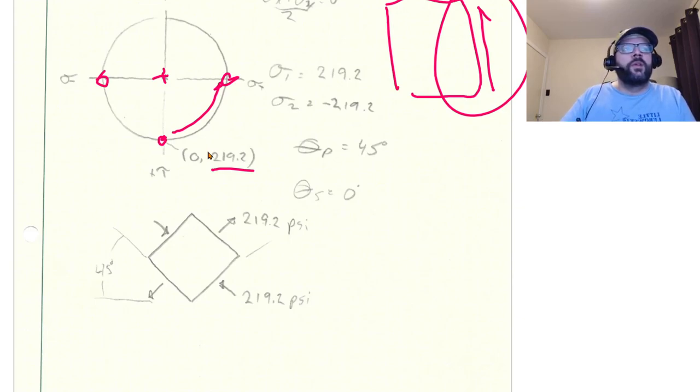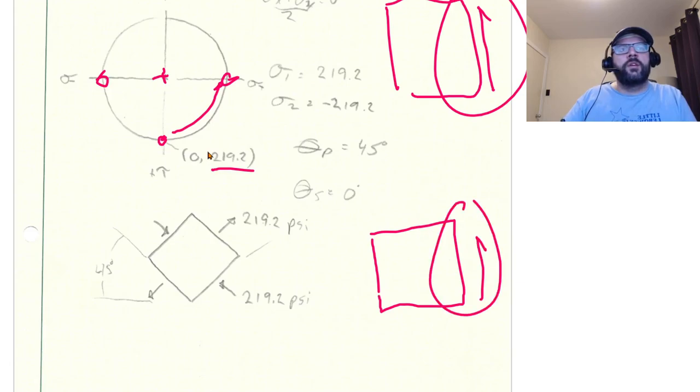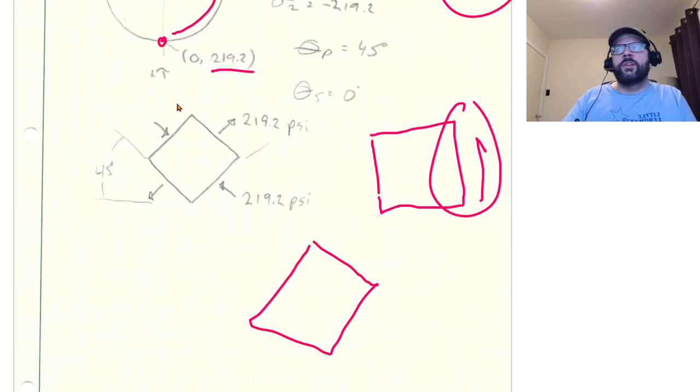So to go from there to there, if we start out with the shear stress on this face and we rotate it counterclockwise 45 degrees, that means that this face corresponds to this face here and we moved from here to here on Mohr's circle.